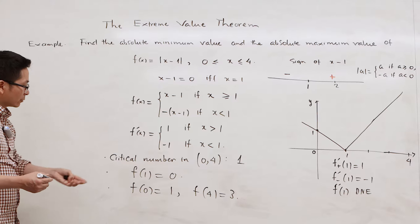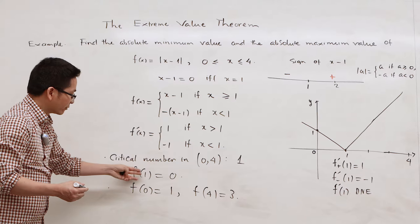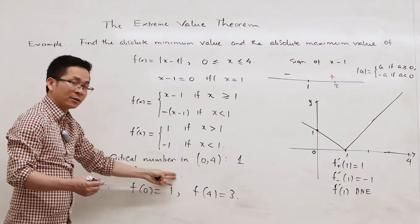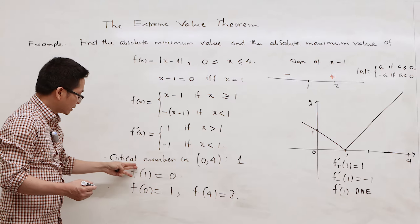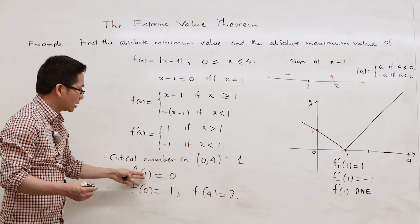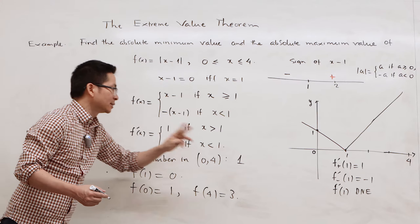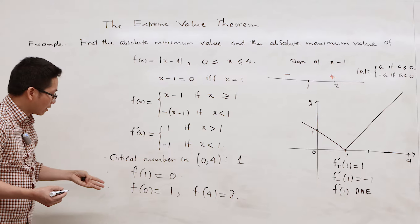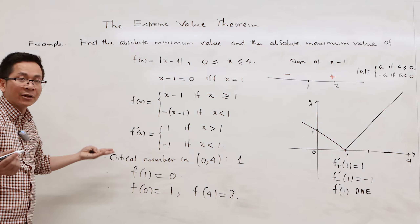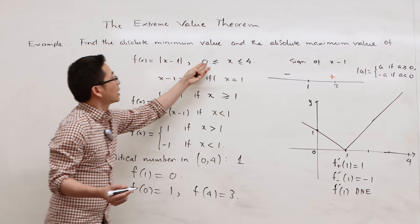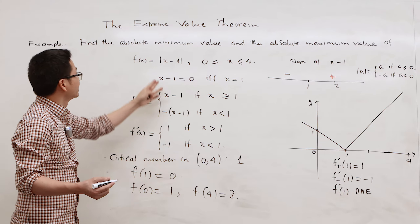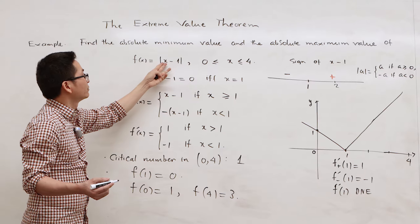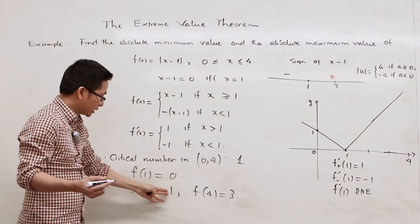In the second step, we evaluate f(1). We replace x by 1 and get 0. This is the function value at the critical number. Then we evaluate the function at the endpoint x = 0. We compute the absolute value of 0 minus 1, which is 1.